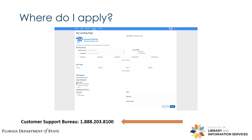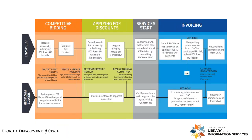The first thing I would say is check your library's account in EPIC — that's the E-Rate Productivity Center. You would either need to make sure that you have access to your library's existing account or start one. You can do that by calling the Customer Support Bureau at the number shown on the screen.